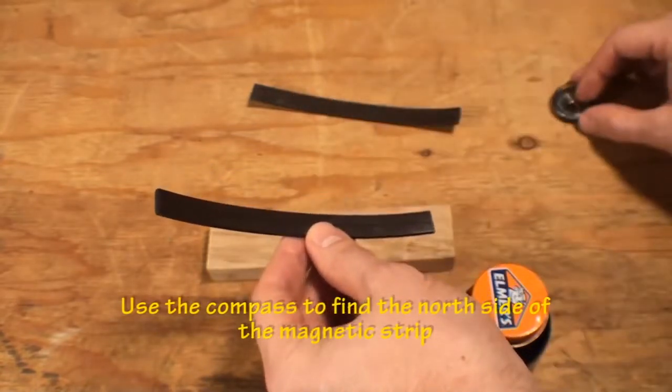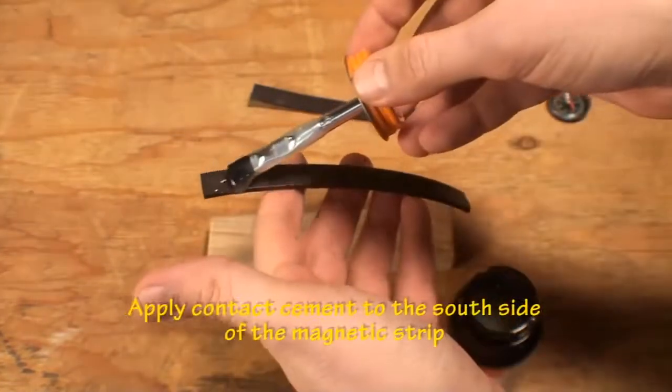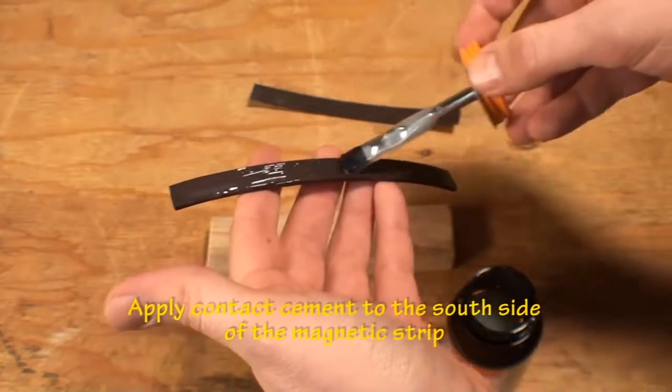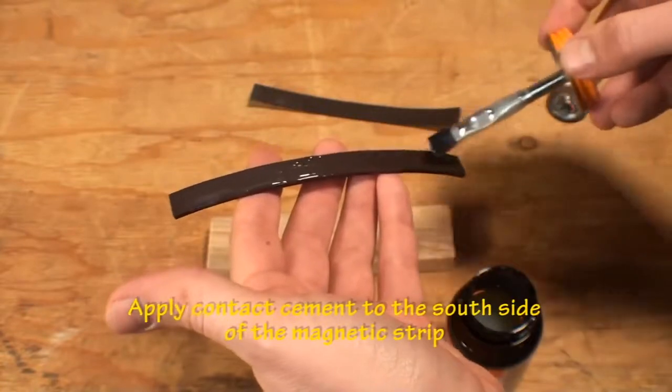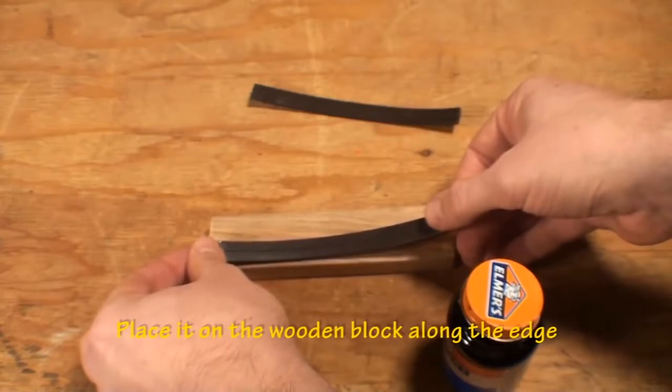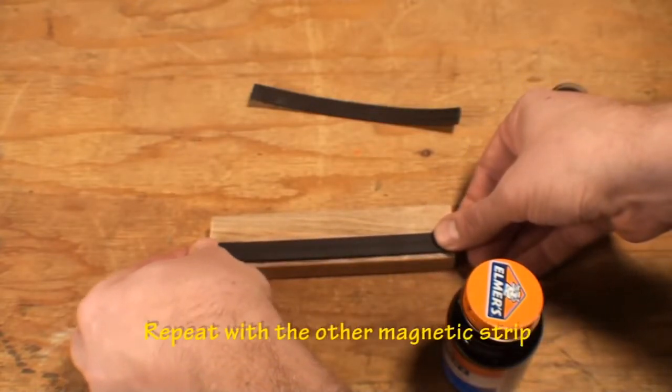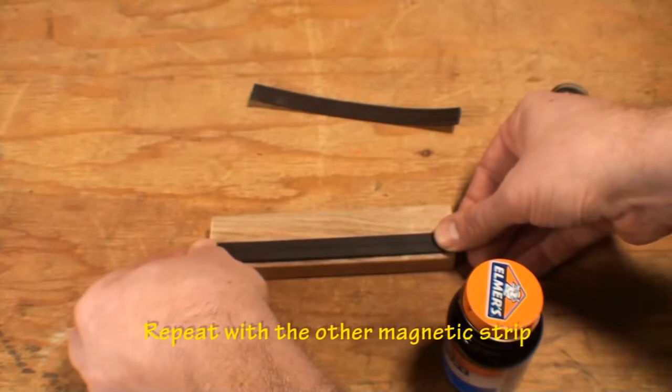Take the compass and find the north side of the half inch by five and seven eighths inch long high force magnetic strips. Place a light coat of contact cement on the south side of the magnetic strip and place it near the edge of the wooden block. Repeat this for the other magnetic strip and allow it to dry.